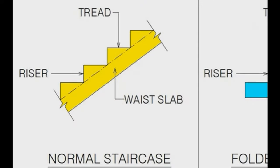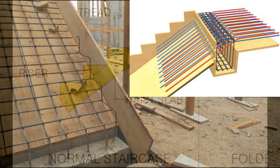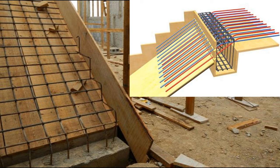With a normal staircase, what's called a waist slab will take the place of what would normally be your stringer. The waist slab is what the steps sit on top of. The waist slab is usually around 4 inches, 4 or 5 inches thick.